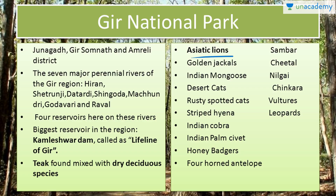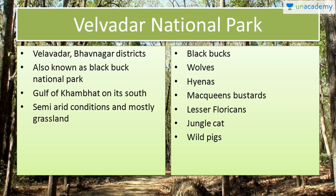Here we have Velavadar National Park. You will find here a large number of Black Bucks, hence it is also known as Black Buck National Park. It is near Velavadar and Bhavnagar district and lies in north of Gulf of Khambhat. You will find here semi-arid conditions and grasslands. Animal species include wolves, hyenas, macquins, bustards, lesser floricans — these two are birds — jungle cat and wild pigs.